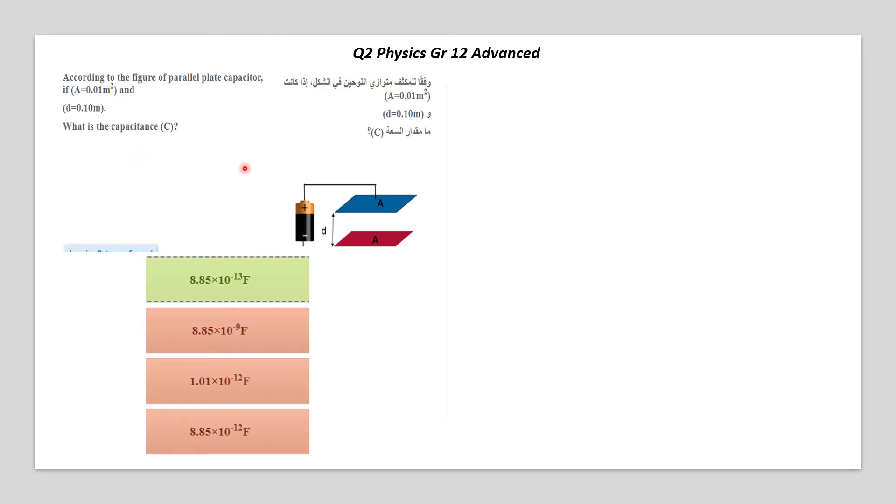Asking for the capacitance. So, because you studied very well, you should remember this equation. C, which is the capacitance, equals the electrostatic constant epsilon 0, multiplied by the area, divided by d.